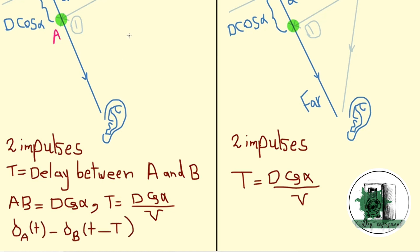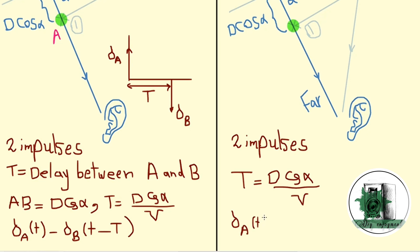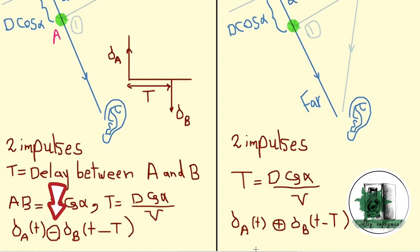The second impulse represents the delay caused by the spacing between the drivers. The distance between the drivers along the direction of incidence is given by d times cosine alpha, and the delay is calculated by dividing this distance by the speed of sound. Pay attention to the negative sign for dipole and the positive sign for bipolar.